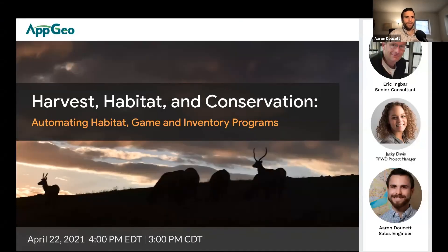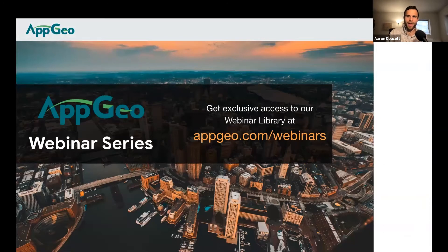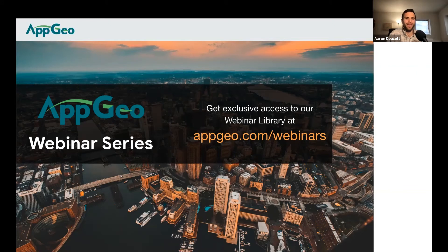I'm Aaron here with AppGeo, and you are here for the Harvest, Habitat, and Conservation webinar where we're going to be talking about automating habitat game and inventory programs. This presentation is being made on April 22, 2021, and will be available as a recording in our library afterwards. You can find it on our website, appgeo.com/webinars, where you'll find recordings of all the webinars we've done over the past couple of years. You can also pre-register for some of our upcoming events as well.